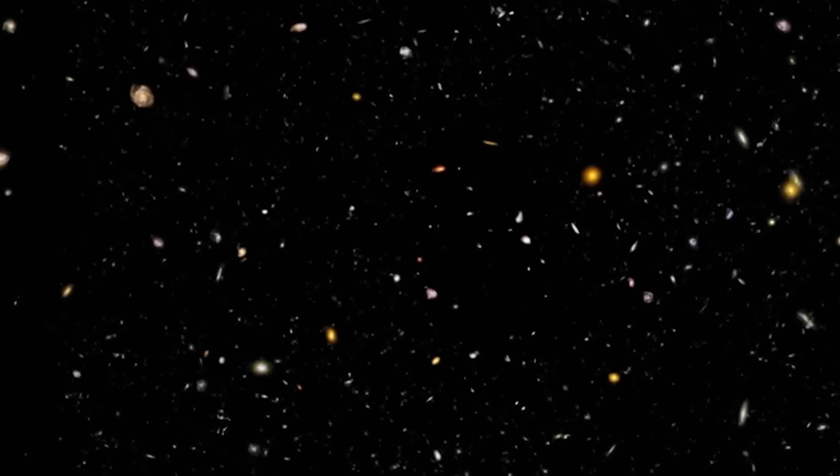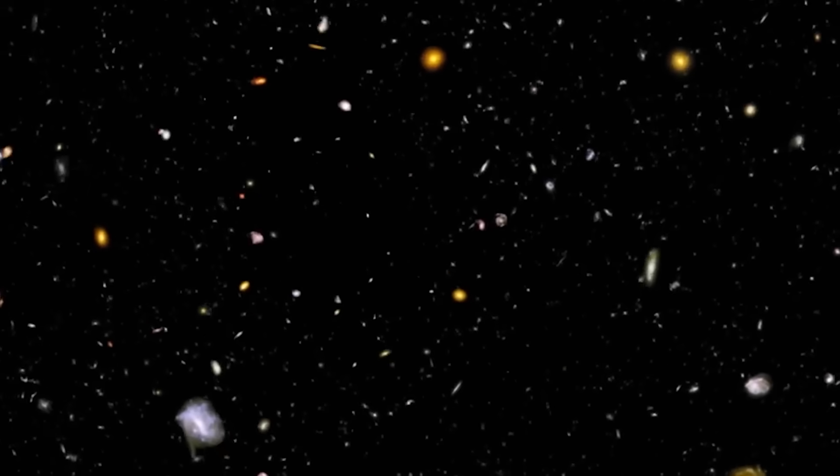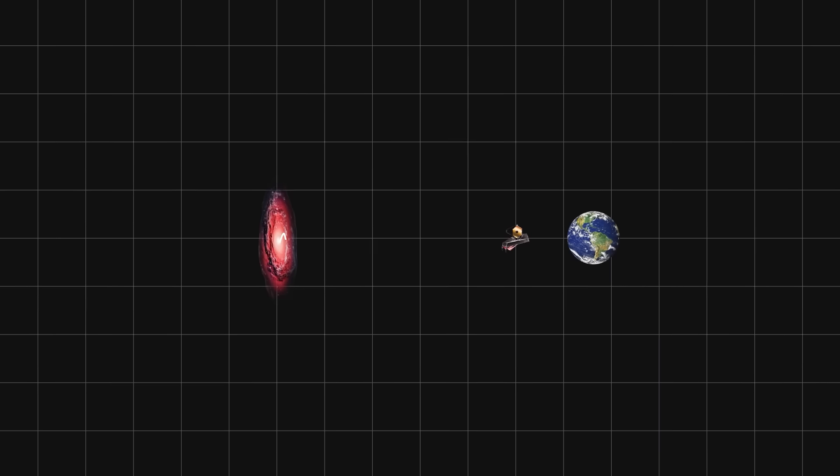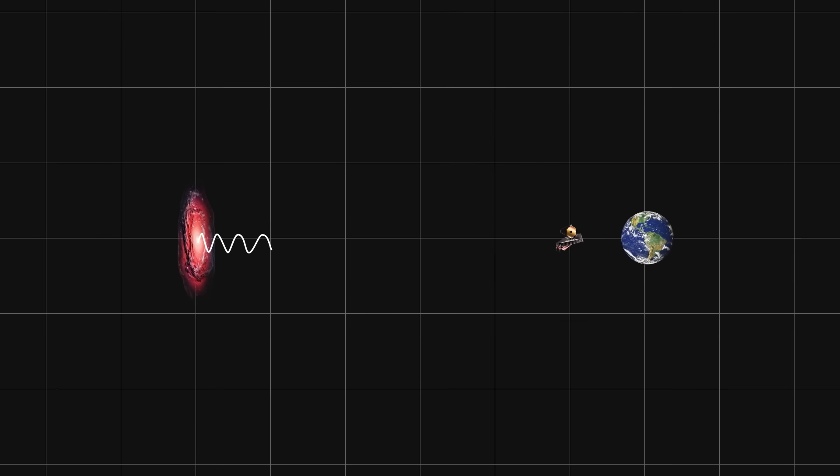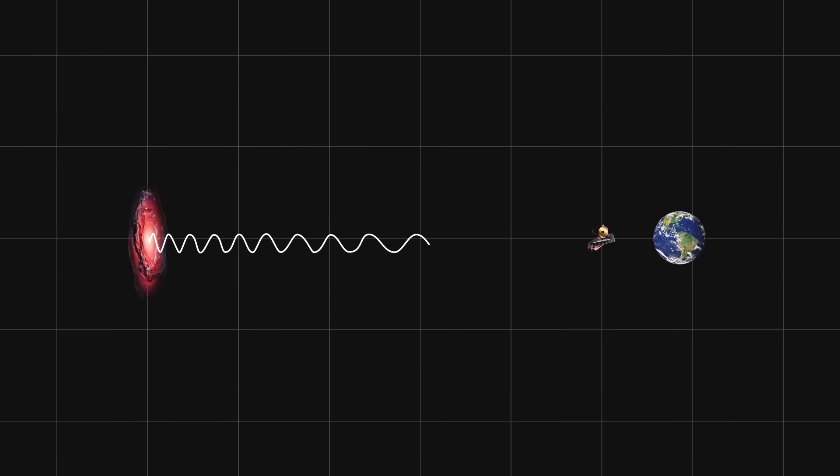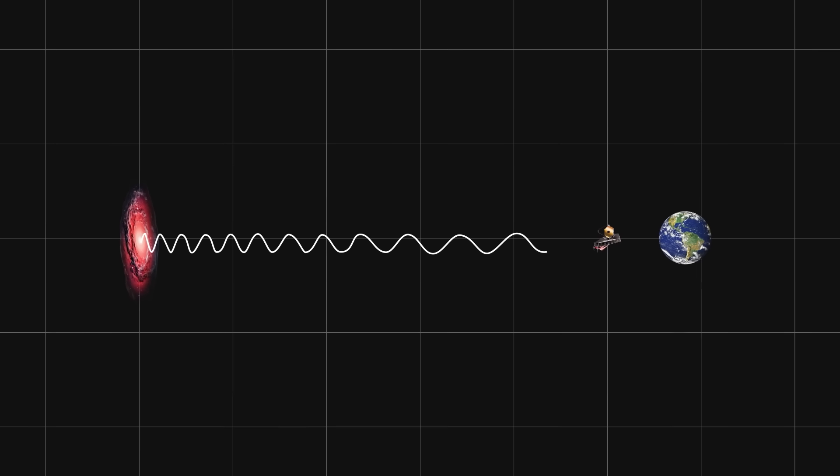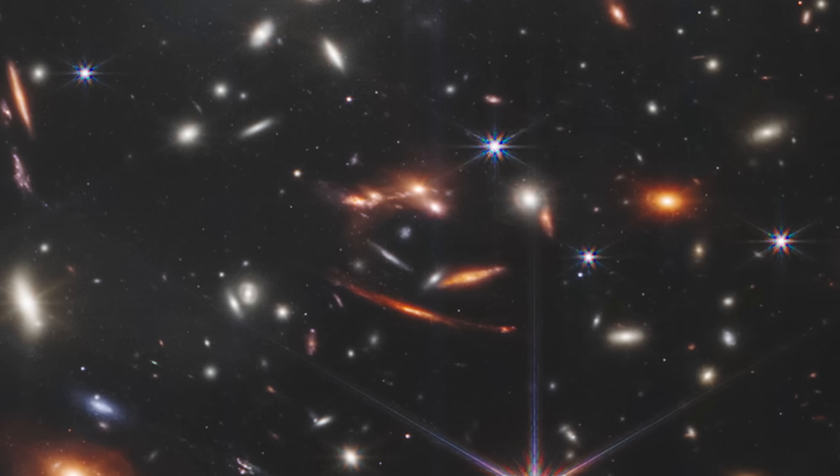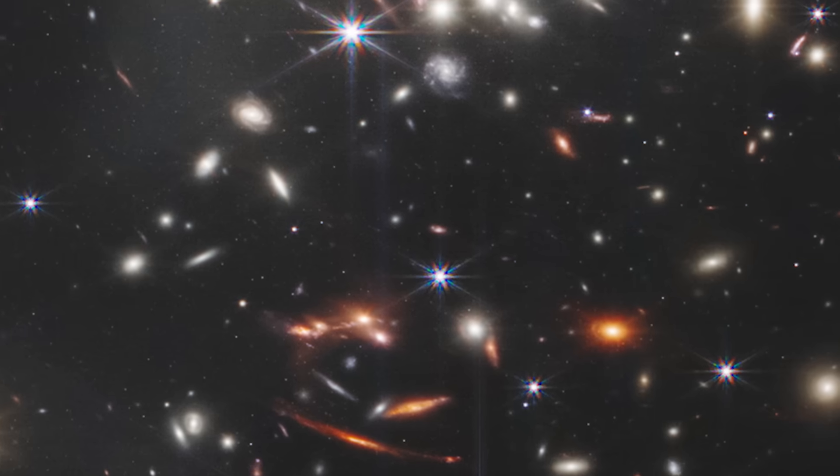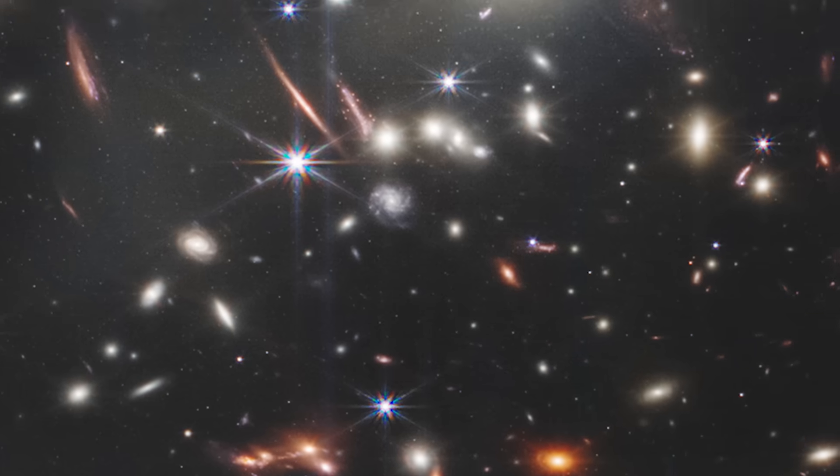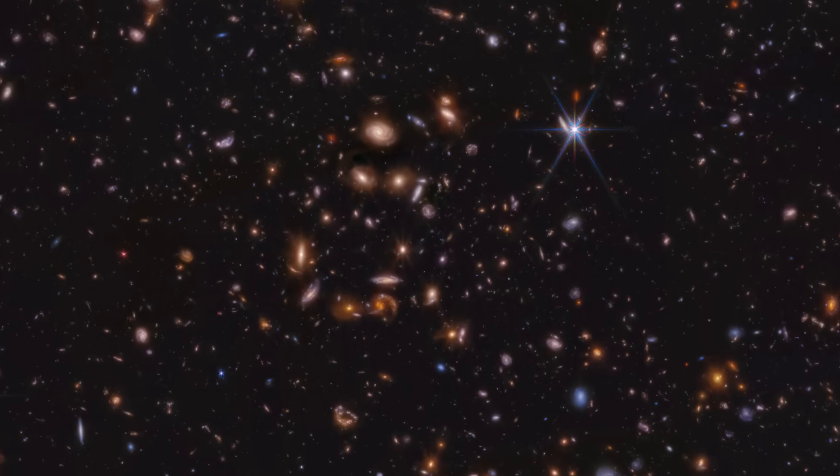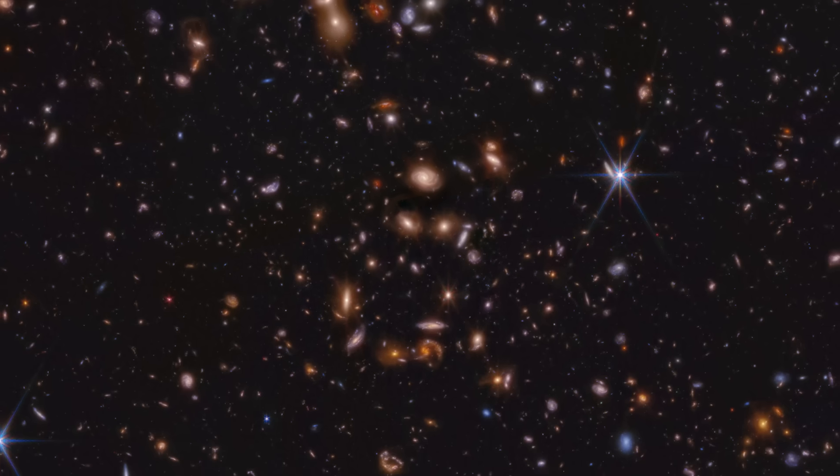That's because light doesn't travel instantly. It takes time to move across the vastness of the universe. So when JWST observes galaxies that are billions of light years away, the light it's capturing left those galaxies billions of years ago. We're not seeing them as they are today, we're seeing them as they were when the light first began its journey. It's like looking at a cosmic time capsule, the universe's ancient history frozen in light.